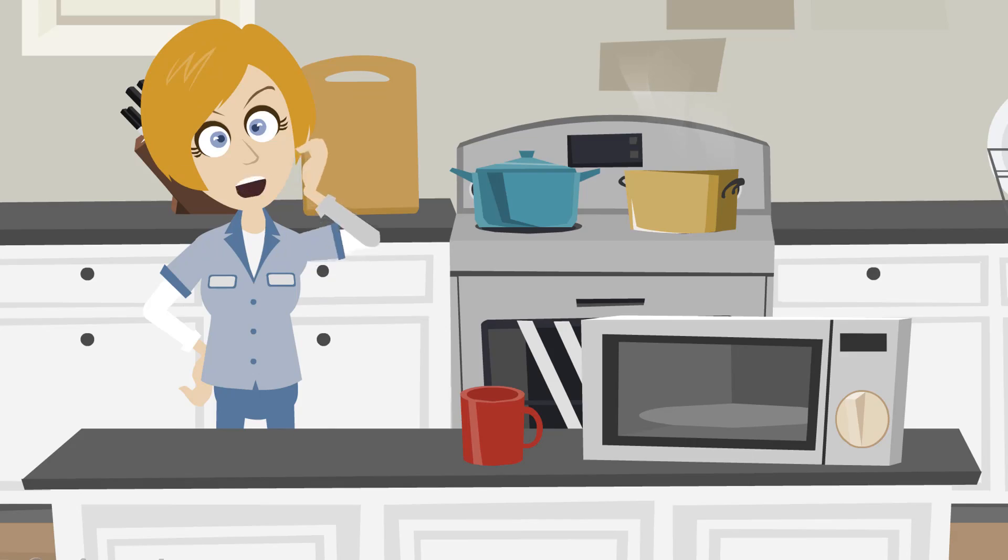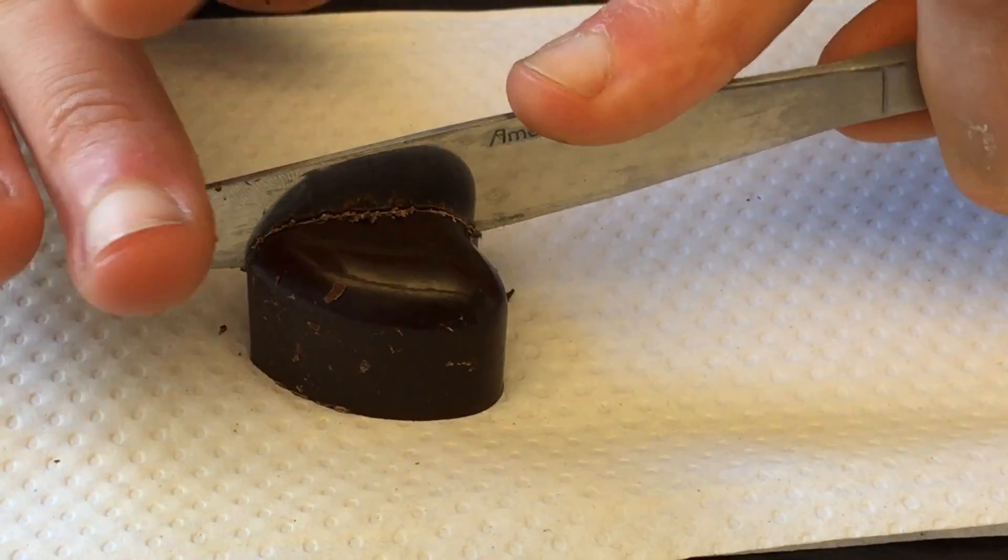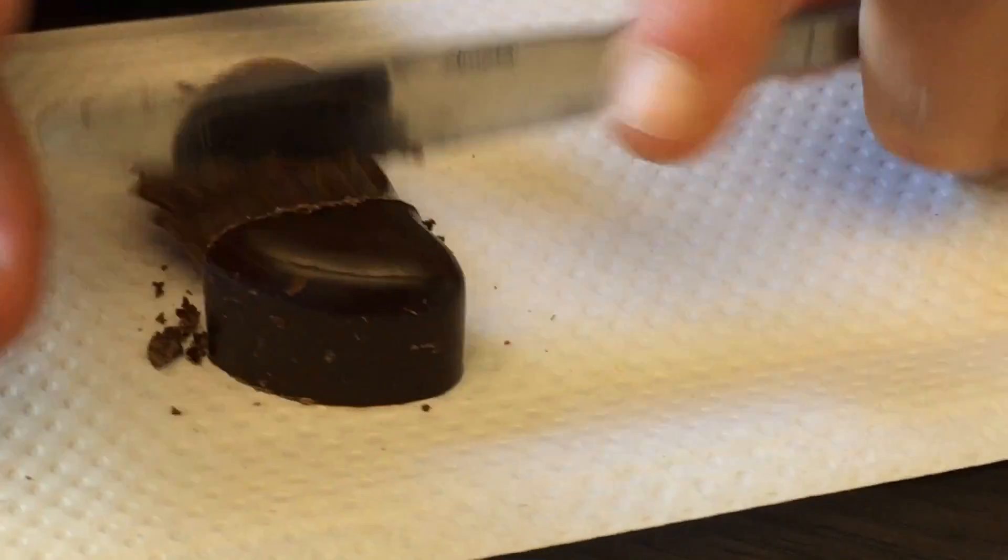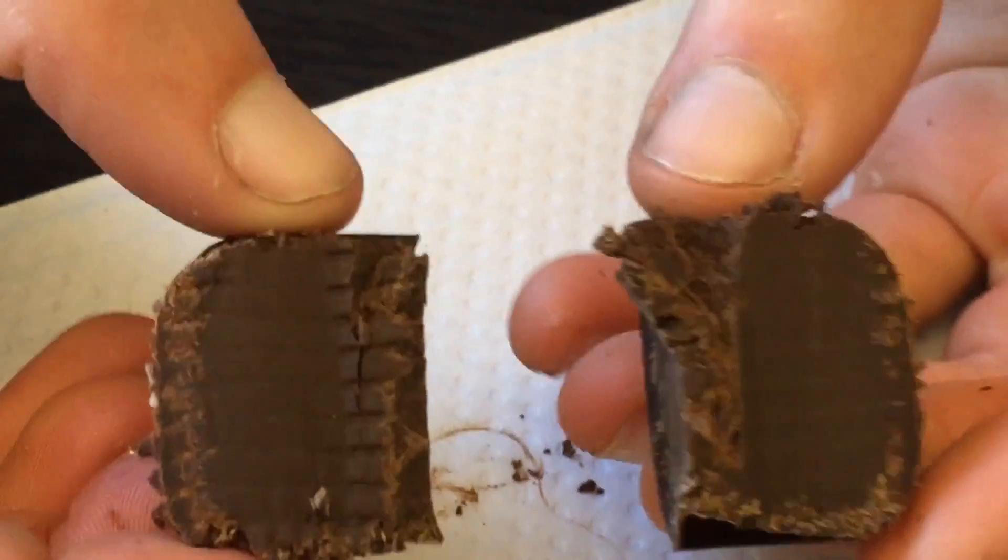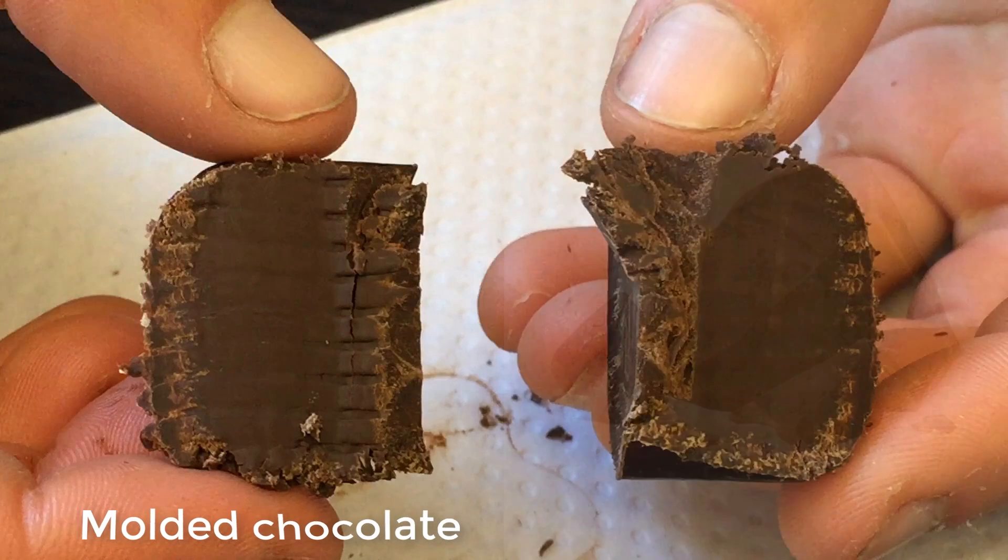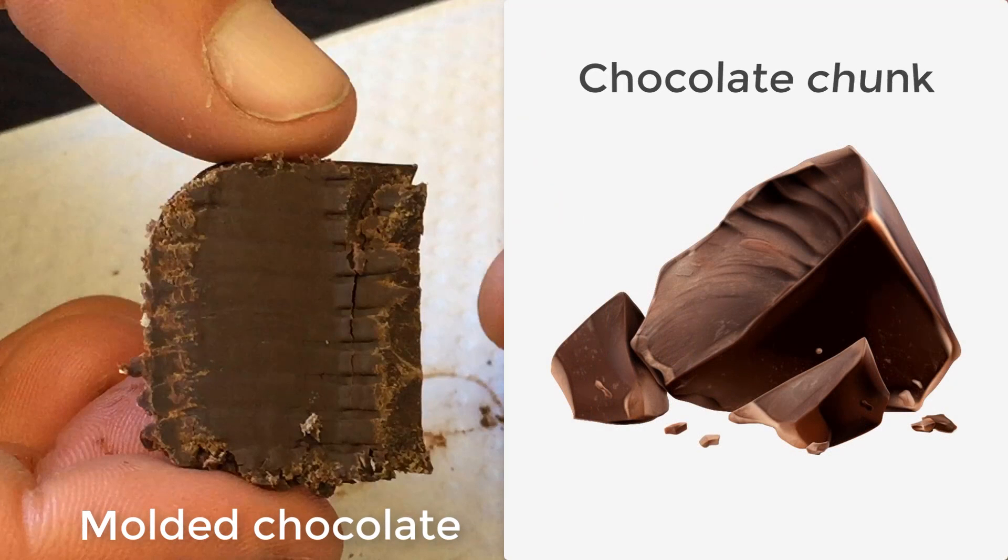But is the material actually the same? Let's break open a couple of our molded chocolates and a couple of the chocolate chunks used to make them and compare. In the first comparison, the molded chocolate and original chocolate chunk look the same inside. They are both dense, solid pieces of chocolate.